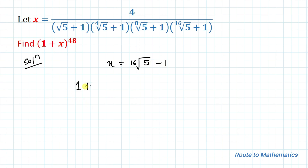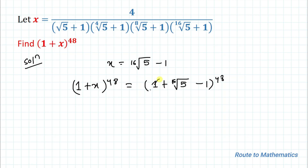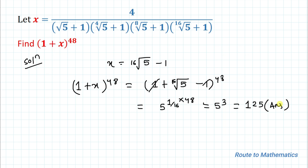Now we find (1 + x)^48. Substituting x = 16th root of 5 − 1, we get (1 + 16th root of 5 − 1)^48 = (5^(1/16))^48 = 5^(48/16) = 5^3 = 125. So the answer is 125. I hope you have understood the solution. Thanks for watching — please subscribe to my channel and hit the like button for more such interesting questions.